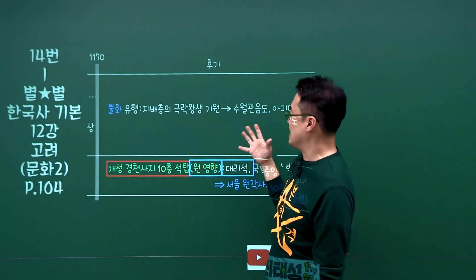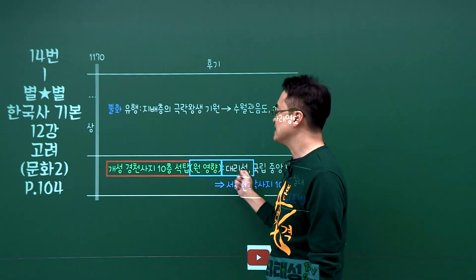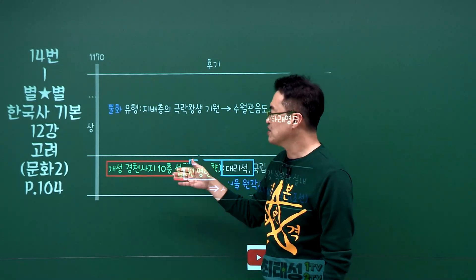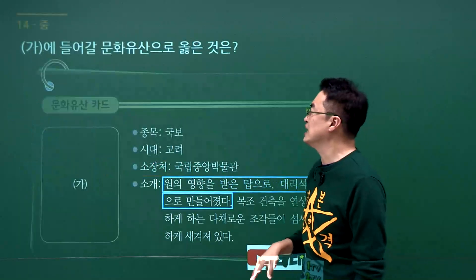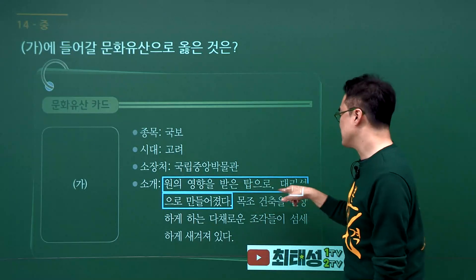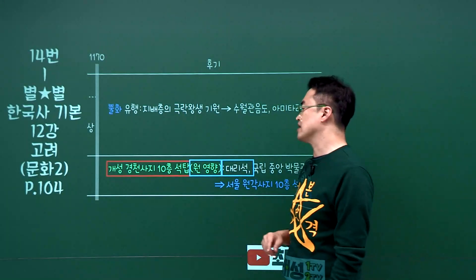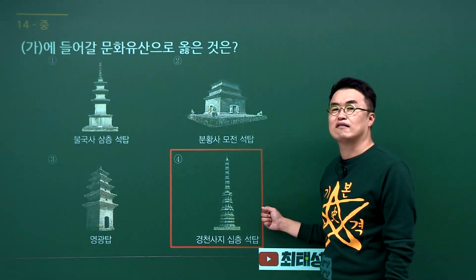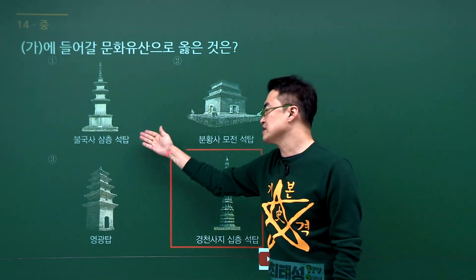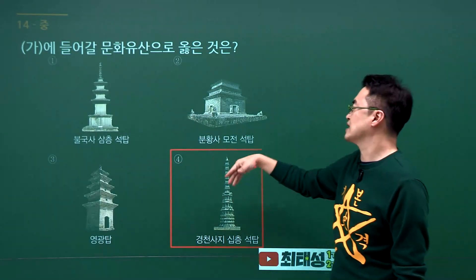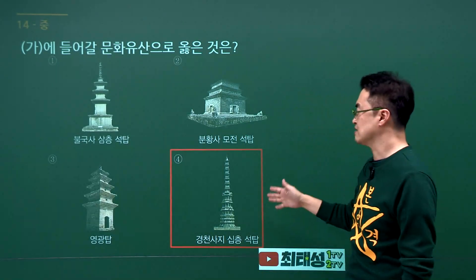고려 말기 탑 문제입니다. 원나라의 영향을 받아 대리석으로 만들어진 탑은 개성 경천사지 10층 석탑입니다. 문제에서 원의 영향을 받은 탑이 대리석으로 만들어졌다고 했으니 개성 경천사지 10층 석탑입니다. 정답은 4번입니다. 불국사 3층 석탑은 통일신라탑, 분황사 모전석탑은 신라탑, 영광탑은 발해탑입니다.